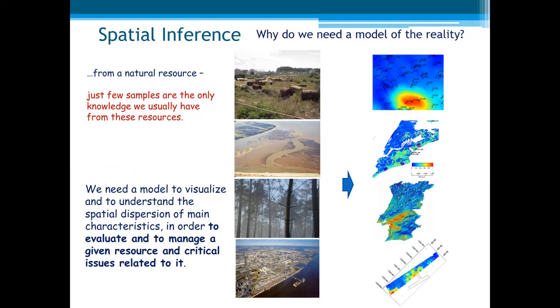Here comes again the important question. Why do we need the model of the reality? And the answer, again, is simple. From a natural resource, for example, a contaminated soil or habitat of migratory birds in wet areas, forest, for example, this one with infectious diseases, contaminated sediments in the river, just few samples are the only knowledge you usually have from these resources. Hence, we need a model to visualize and to understand the spatial dispersion of main characteristics in order to evaluate and to manage the given resource and critical issues related to it. That's the answer.